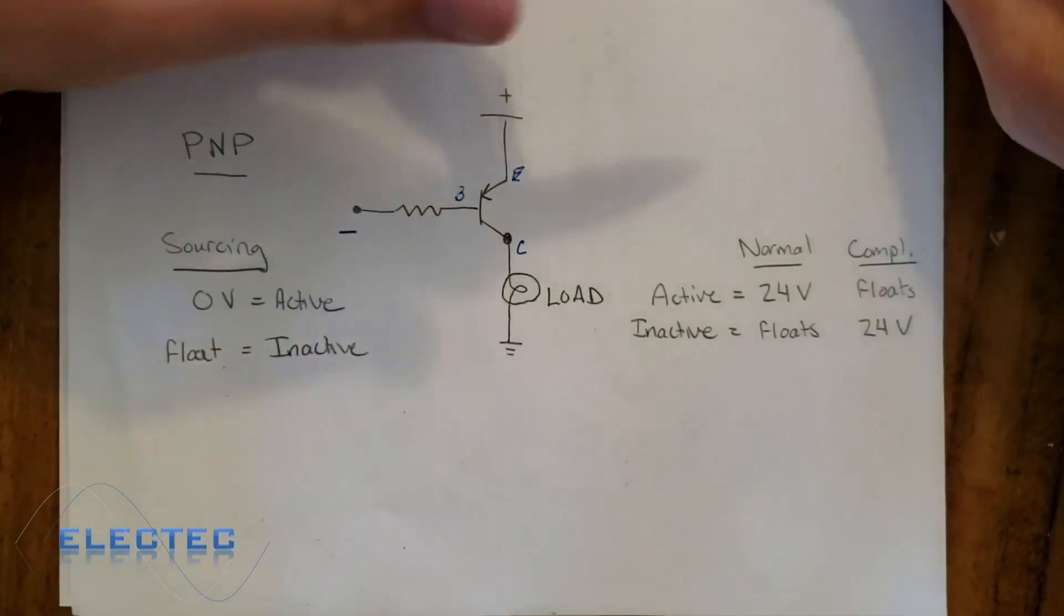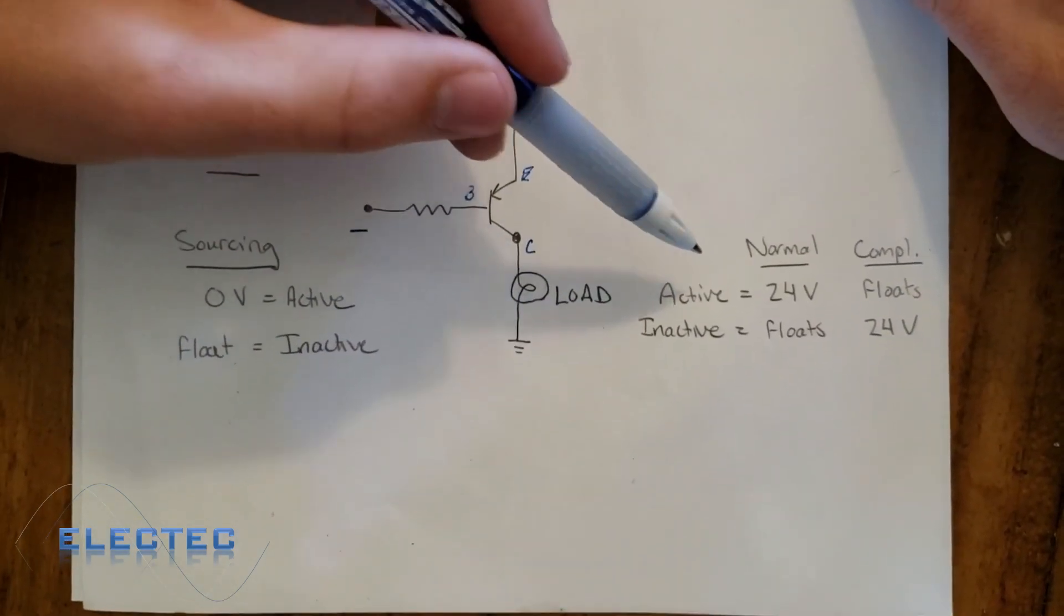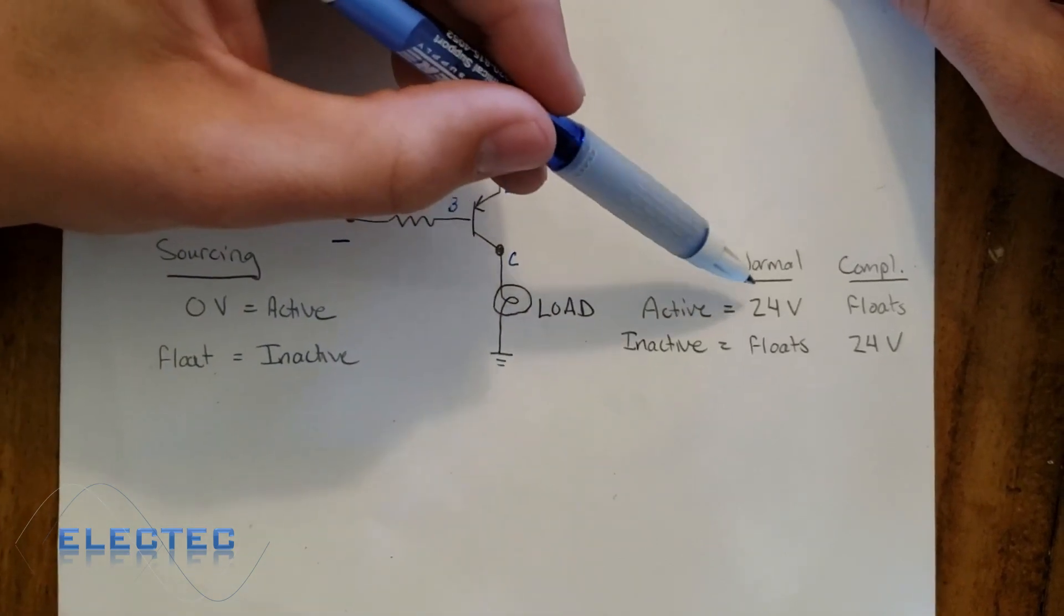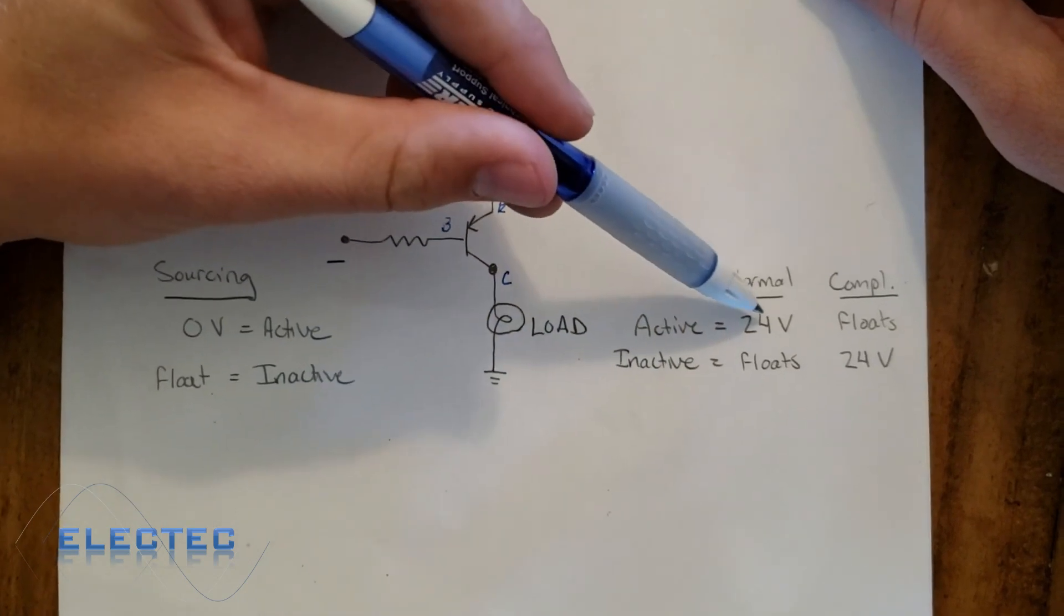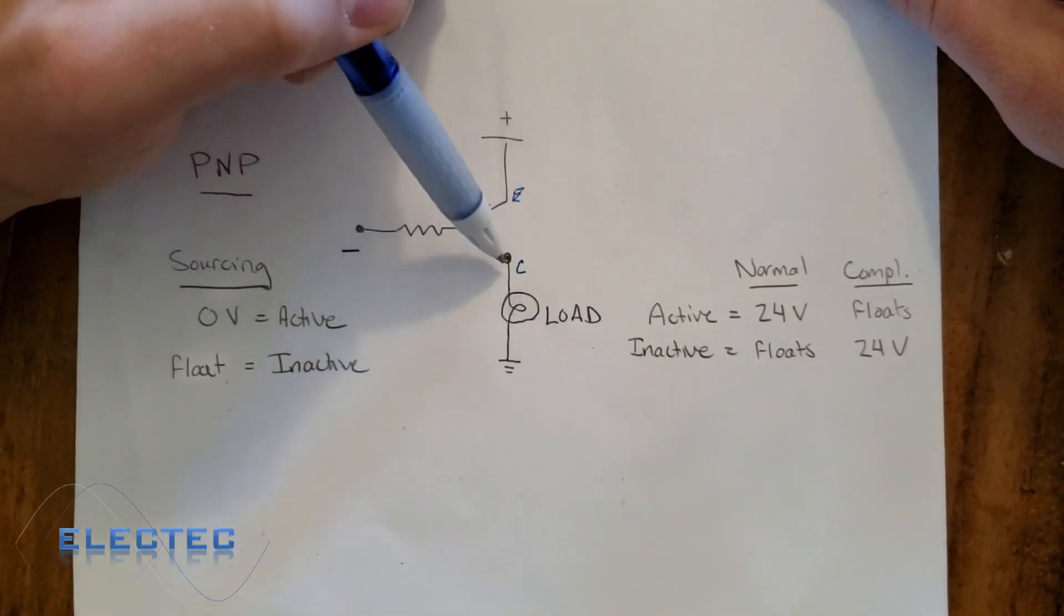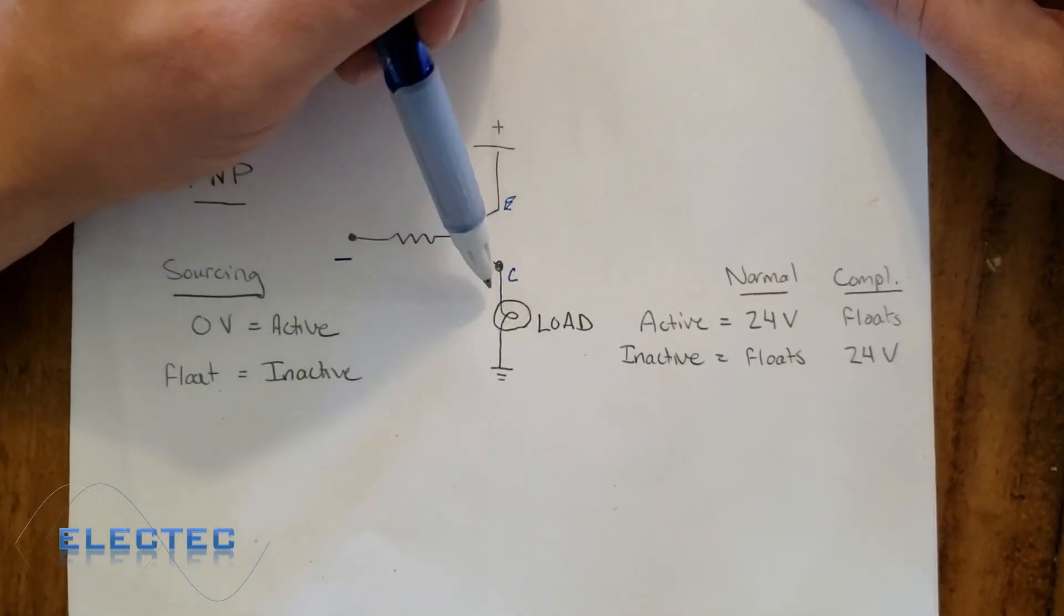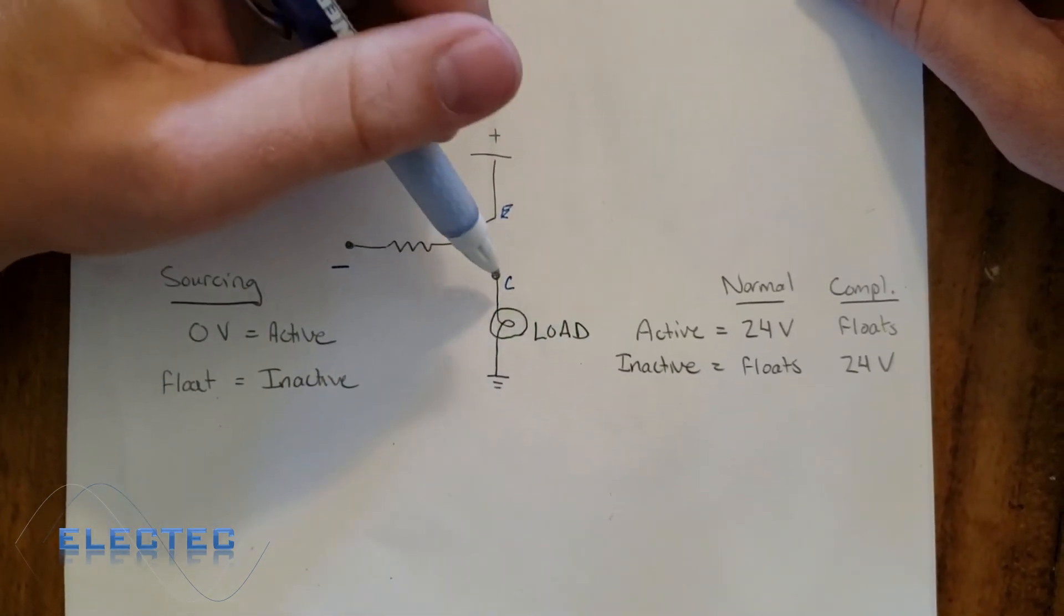So just look at my little chart here once more. On the output side, once our transistor is active, what happens on the collector side, or on the side you connect your load to, is that we get 24 volts visible on the collector side. When the transistor is off or inactive, it floats.